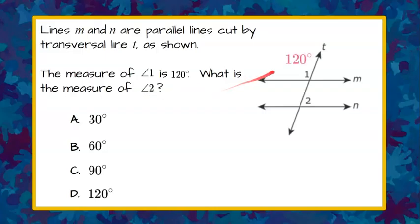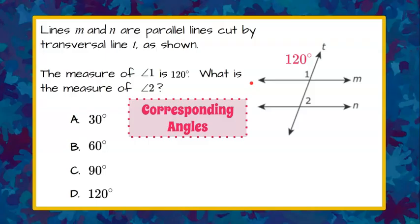So we are going to first label our diagram. We are told that measure of angle 1 is 120 degrees. I'm going to label angle 1 120 degrees. Then I'm going to identify corresponding angles.